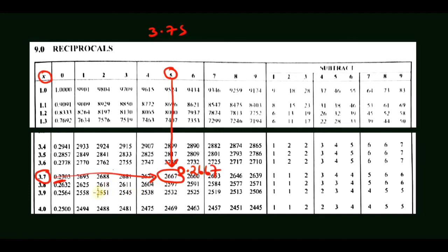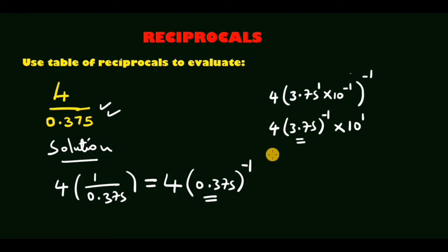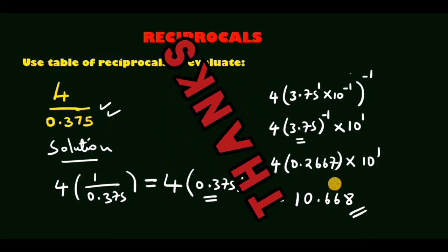We can therefore work out the problem. So in place of 3.75, that is the reciprocal, we will have 4 × 0.2667 just as we read from the table, and then we multiply by 10 power 1. And finally when we multiply this, from my calculator I am able to get 10.668, and that finally is the answer to this problem. Thank you for watching, see you next time!